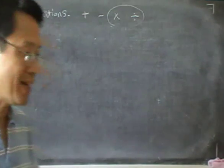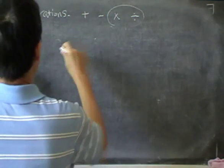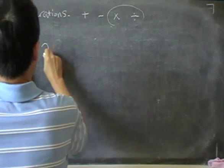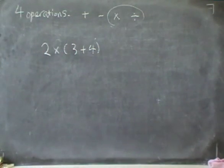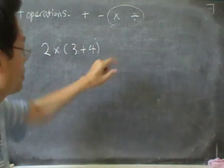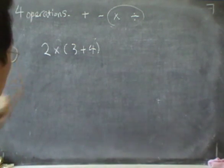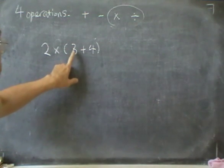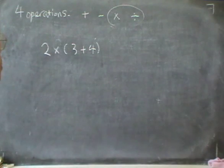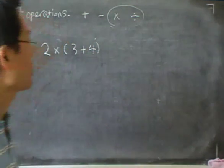And the next thing I want to look at is the use of brackets. Suppose I have this sum now: 2 × (3 + 4). Now, the next rule about the operation is that if you have a bracket, you must do the bracket first. So the bracket always comes first.